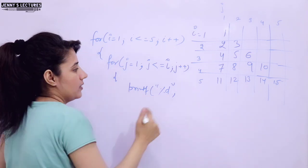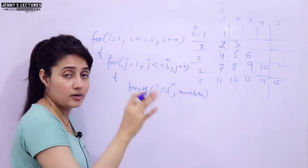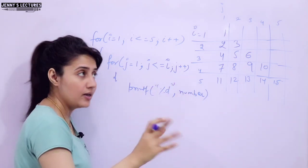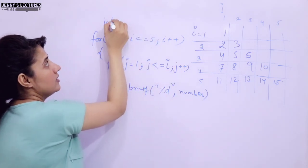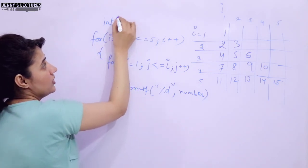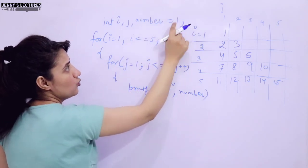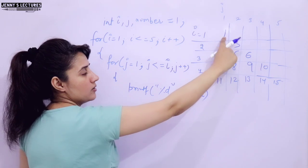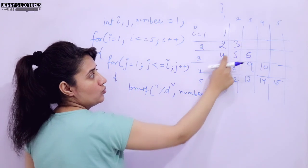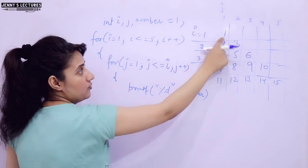So let's take another variable named 'number' — or any variable name like ABC or XYZ. I am initializing it, and obviously in the program I will show the complete code on my laptop. We should initialize I, J, and the variable number. I am initializing number with 1 because I am going to start printing from 1. If it started from 0, we would initialize it with 0.